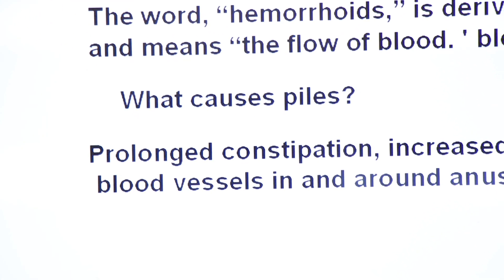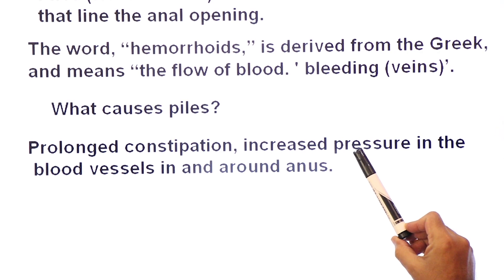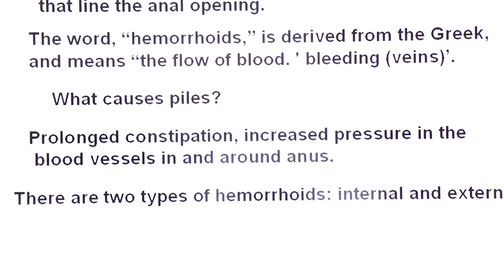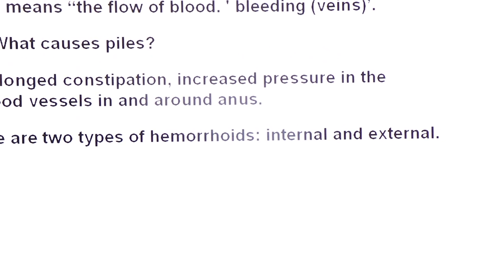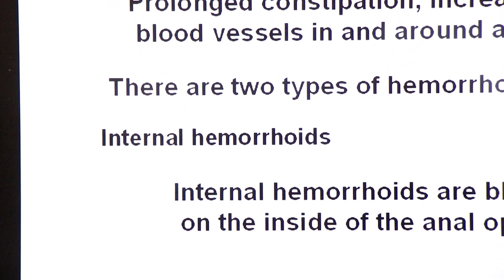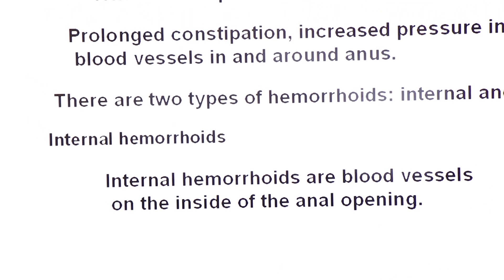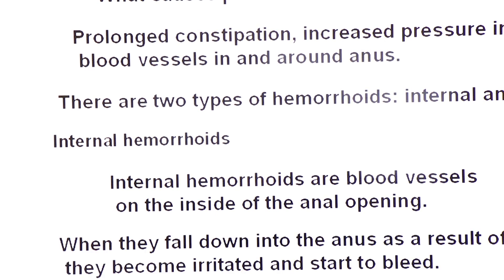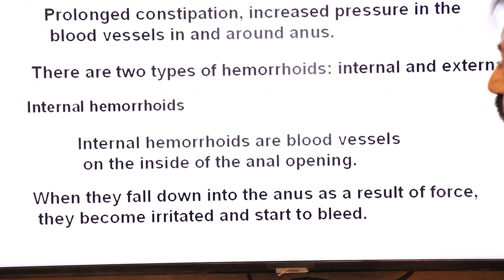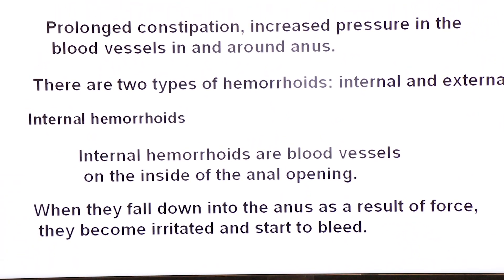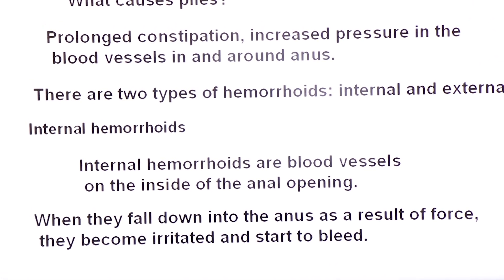What causes piles? Prolonged constipation is the main cause of piles — increased pressure and force in the blood vessels in and around the anus. There are two types of hemorrhoids: internal hemorrhoids and external hemorrhoids. Internal hemorrhoids are blood vessels on the inside of the anal opening. When they fall down into the anus as a result of force or pressure, they become irritated and start to bleed — these bleeding veins are called hemorrhoids.